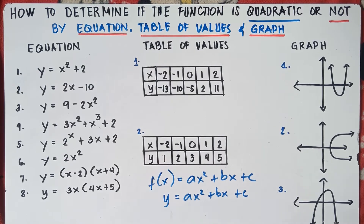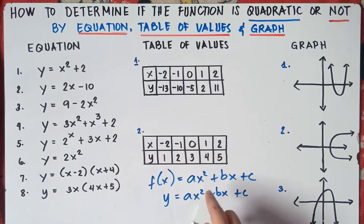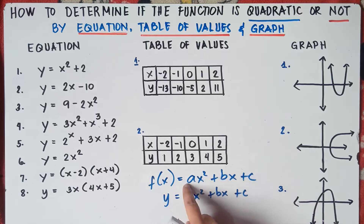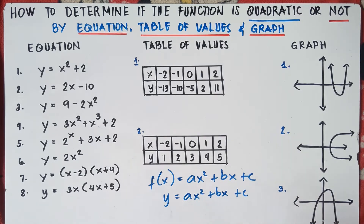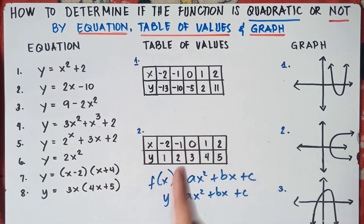In the equation of quadratic function, you will know that it is a quadratic function by means of equation if the highest degree is 2 — meaning if the highest exponent is 2. If the highest exponent is 2, therefore that equation is a quadratic function. The first thing you need to check is the degree, the exponent of the given equation. If it's 2, automatic — that's a quadratic function.